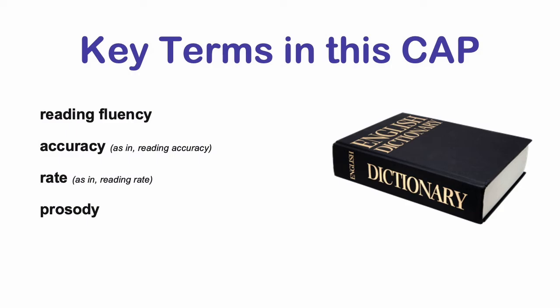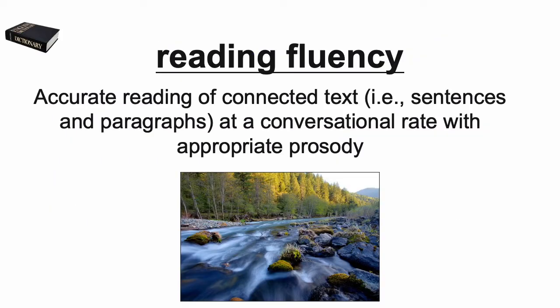Now let's define the key terms that you need to know before we can move forward. Oral reading fluency is the accurate reading of connected text at a conversational rate with appropriate prosody. It's important to note that when we're teaching and assessing oral reading fluency, we are always dealing with connected text — which means full sentences and paragraphs — and not words in isolation like a list of sight words. Oral reading fluency consists of three key components: accuracy, rate, and prosody.